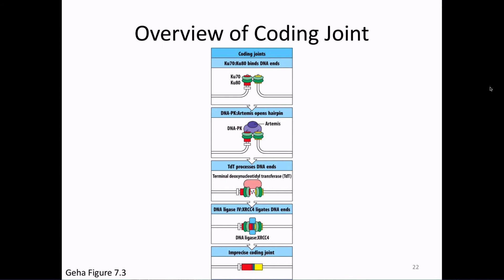Here is our overview of what happens at the coding joint: we have two hairpins formed. Artemis opens those hairpins. N nucleotides are processed by enzymes including TDT, and then we ligate that DNA together, possibly with some additional sequence added in that wasn't in the original germline.